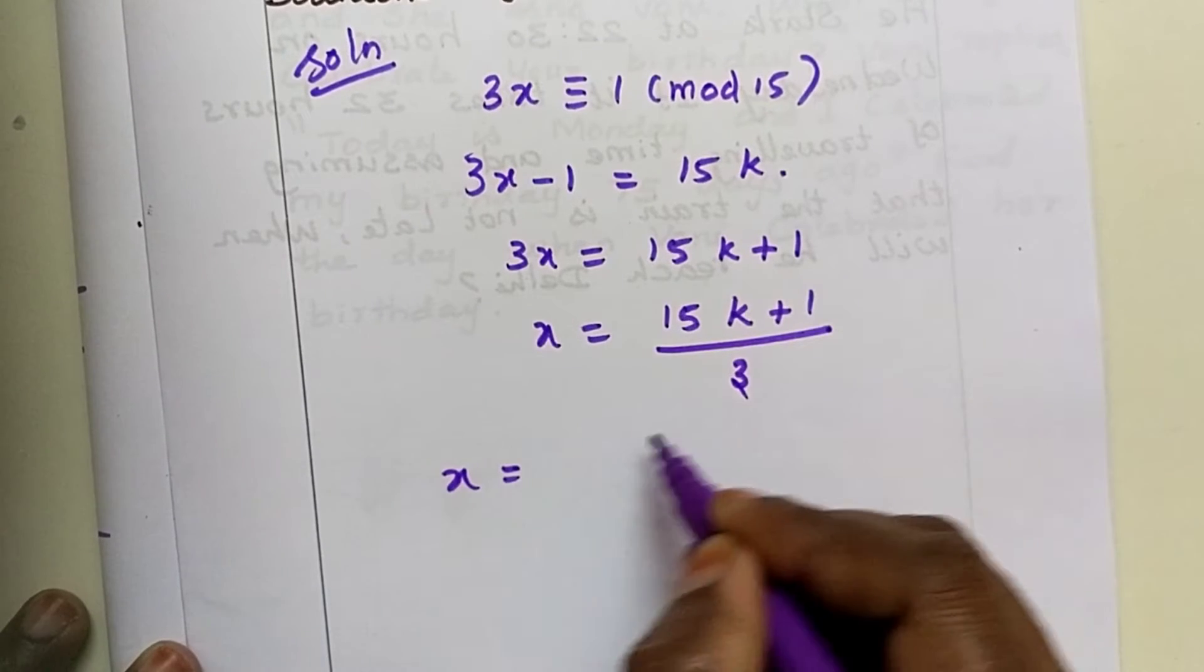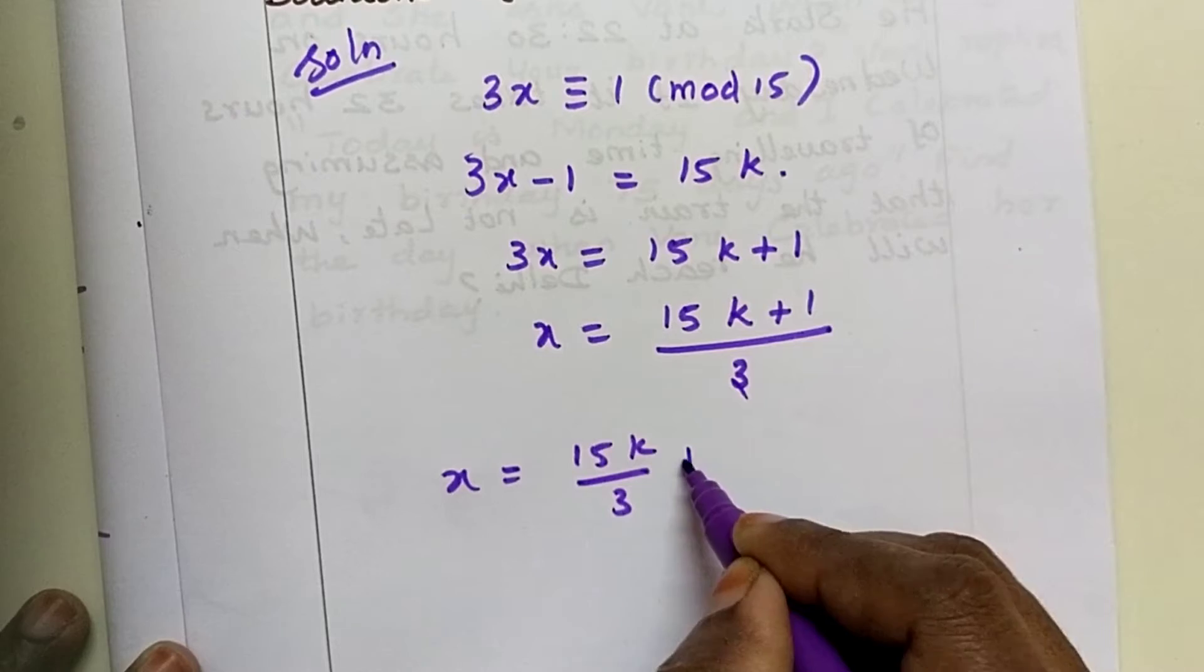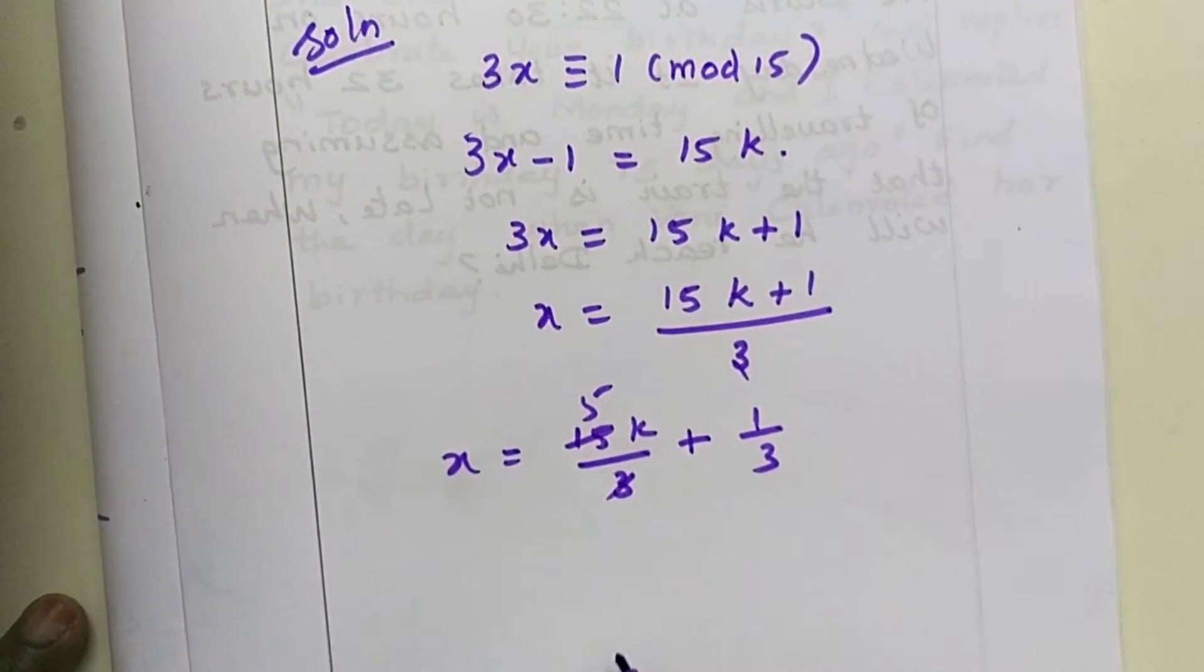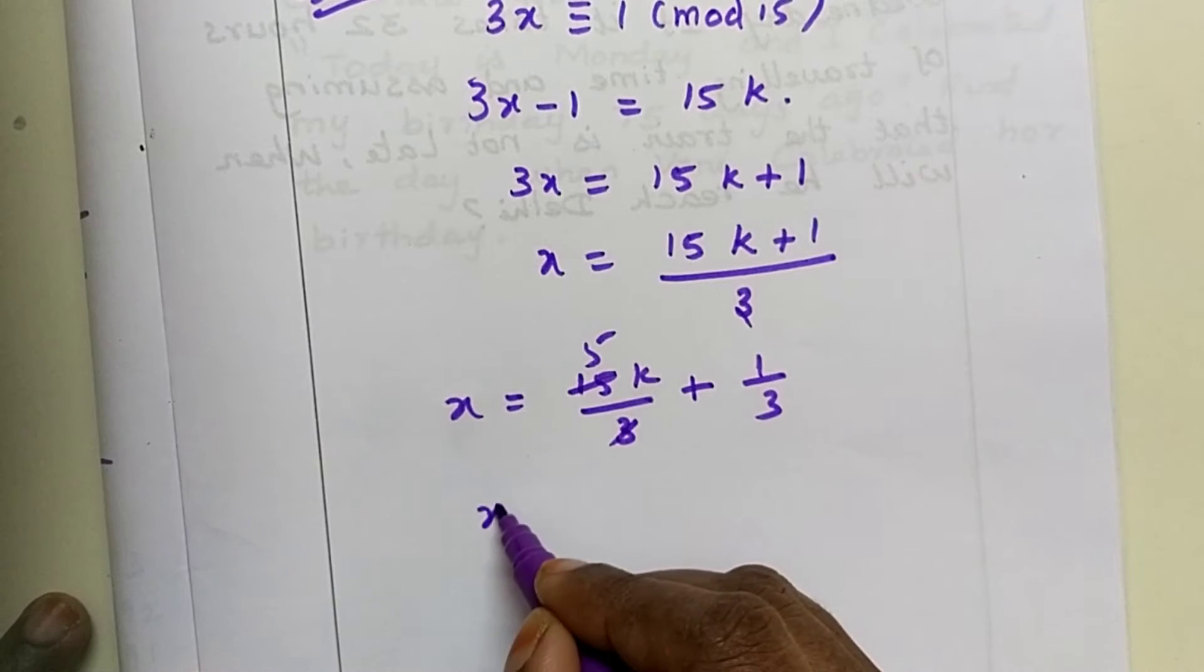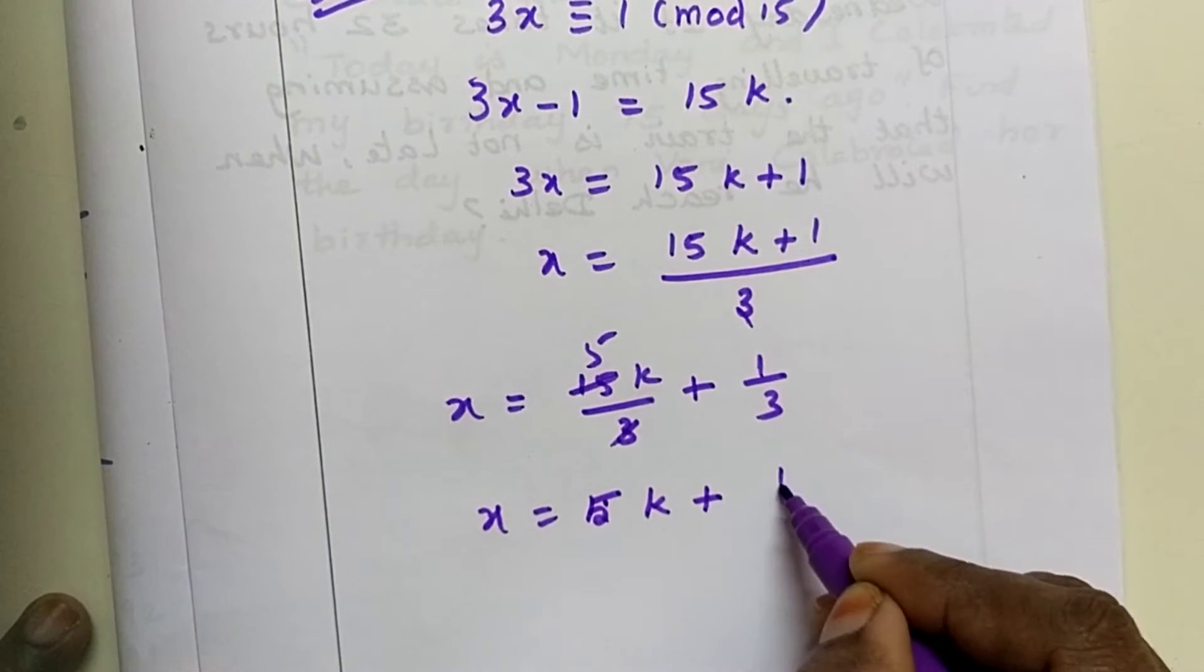Now x equals 15k plus 1 divided by 3. So x equals, separating these, 15k by 3 plus 1 by 3. So 15 divided by 3 is 5. So x equals 5k plus 1 by 3.